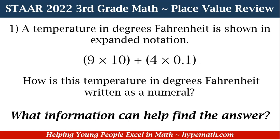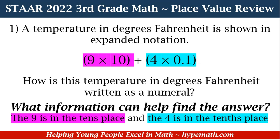Next, we need to identify what information helps us find the answer — pick out the key numbers and key words. From the expanded notation, we know the 9 is in the tens place because it says 9 times ten. We also know the 4 is in the tenths place because it says 4 times one tenth. With that information, we're ready to solve.